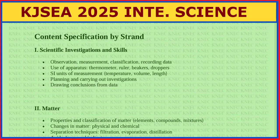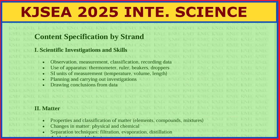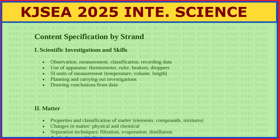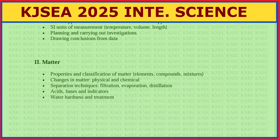Content specification by strand: Scientific Investigations and Skills covers basic skills — observation, measurement, classification, and recording data. It also includes use of apparatus such as thermometer, ruler, beakers, and droppers; units of measurement — for example, the unit for temperature is kelvin (K), volume is cubic metres (a derived quantity), and length is a basic quantity — plus planning and carrying out investigations and drawing conclusions from data.